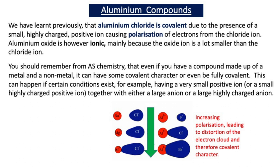You should remember from AS chemistry that even if you have a compound made up of a metal and a non-metal, it can have some covalent character, or even be fully covalent, if certain conditions exist — for example, having a very small or small highly-charged positive ion, as in the case of aluminium, together with either a large anion or a large highly-charged anion.